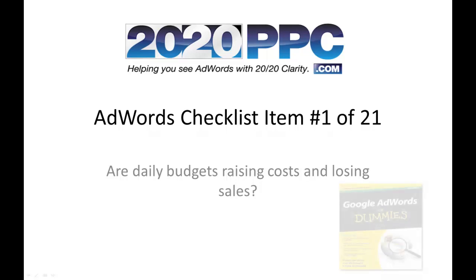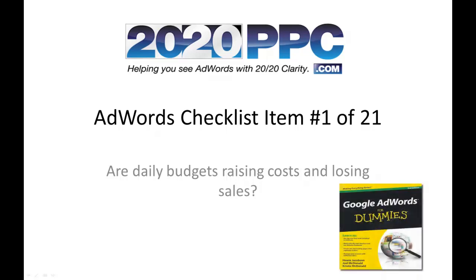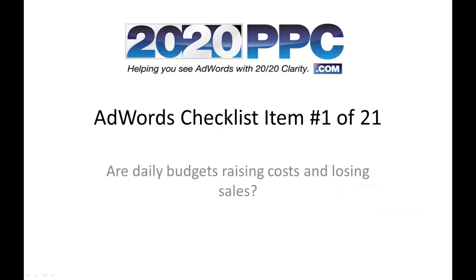Hi, this is Joel McDonald, author of Google AdWords for Dummies, and today we're going to talk about item 1 of 21 on an AdWords performance checklist. And this is probably the most common mistake out of hundreds of accounts I've reviewed. And that mistake is not setting proper daily budgets.